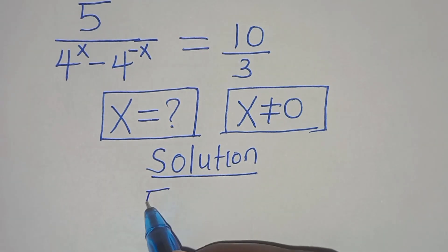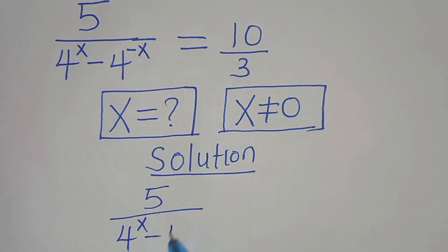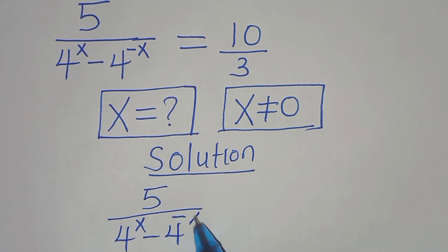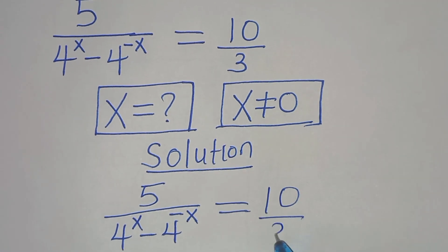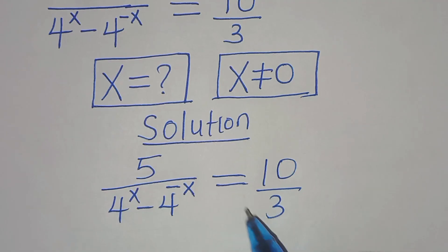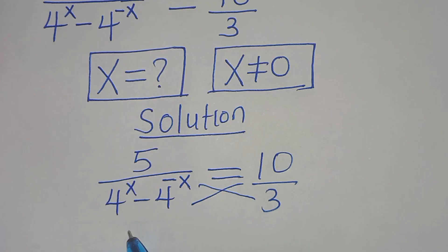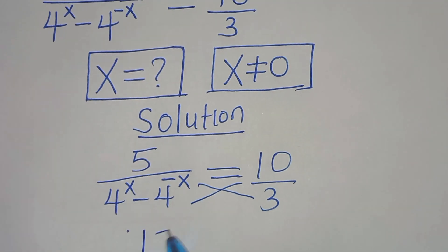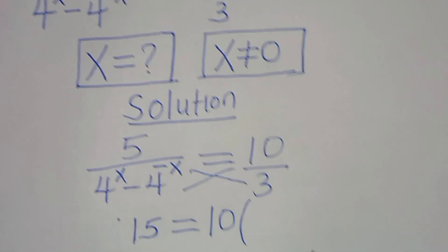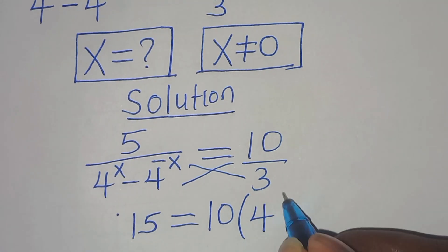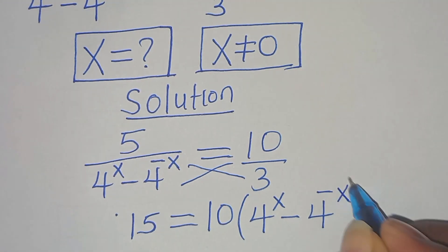We have 5 divided by 4 to the power of x minus 4 to the power of minus x, and this is equal to 10 over 3. The first step is to cross multiply, so that we have 5 multiplied by 3, which is equal to 15, and this equals 10 multiplied by 4 to the power of x minus 4 to the power of minus x.